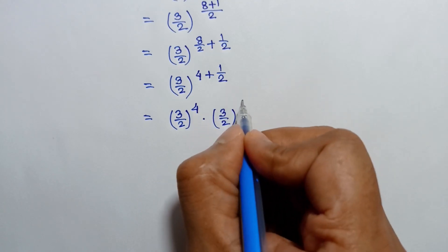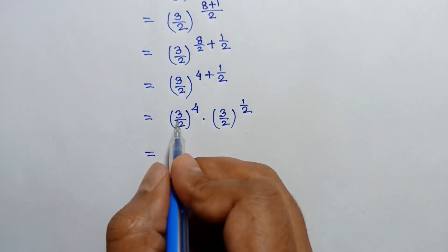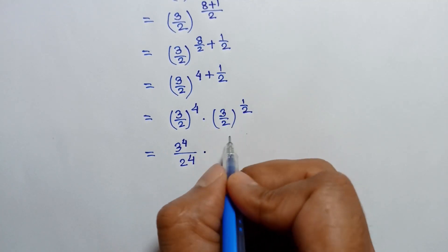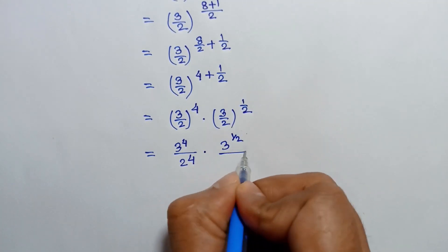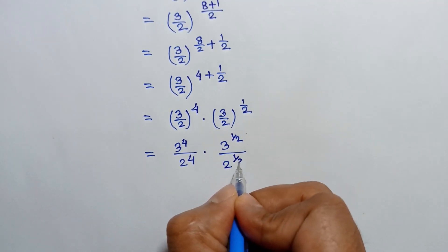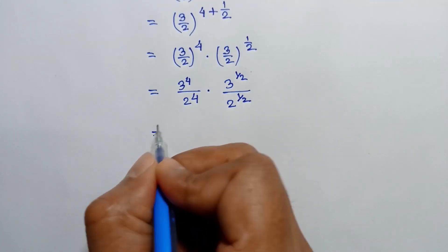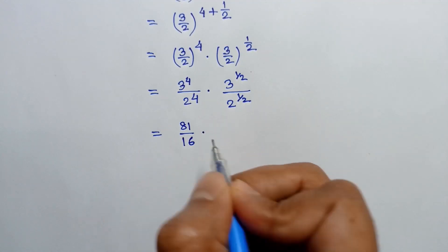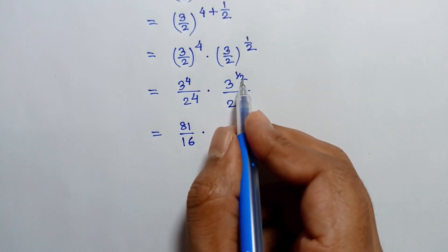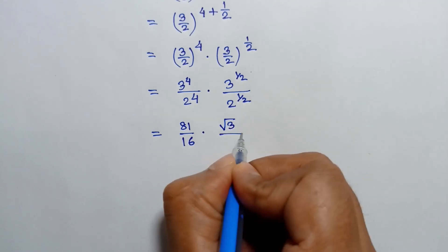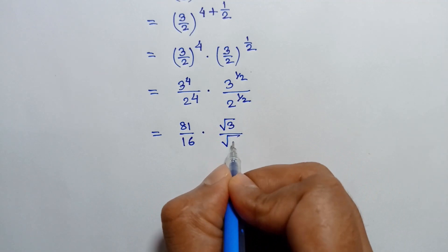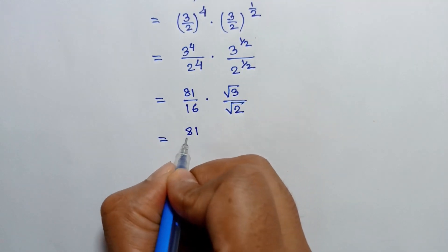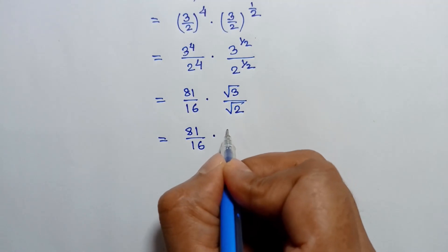This equals 3 over 2, whole to the power 4, times 3 over 2, whole to the power 1 over 2. This equals 3 to the power 4 over 2 to the power 4, times 3 to the power 1 over 2 over 2 to the power 1 over 2. 3 to the power 4 is 81, 2 to the power 4 is 16, and 3 to the power 1 over 2 is square root of 3, over square root of 2.